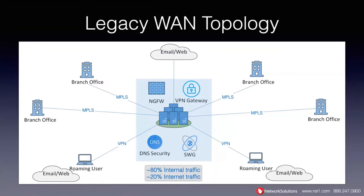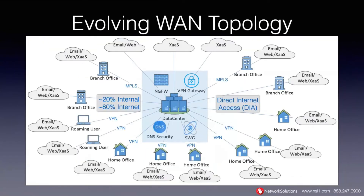What we're evolving into now is a newer WAN topology where the central data center may still be used for core applications, but there's an adoption of cloud applications and software as a service or infrastructure as a service. You may have chosen to swap out expensive MPLS or leased lines with site-to-site VPN for branch offices. And with the COVID situation, we've had an explosion of small office, home office, and roaming users. With this later model, with cloud services, it's more like 80% of the traffic is going to the internet and 20% is internal — the opposite of how it was before.